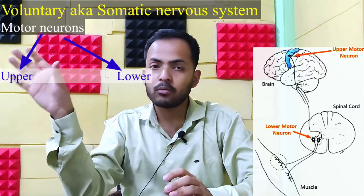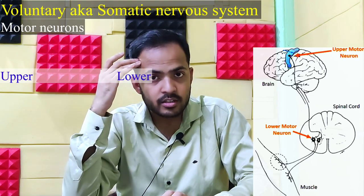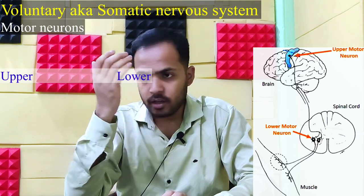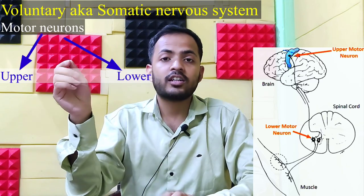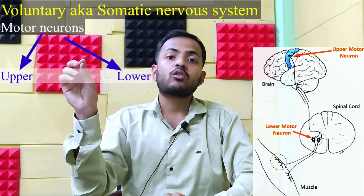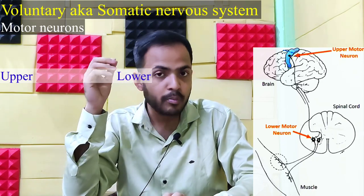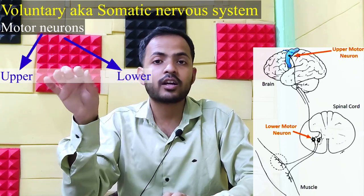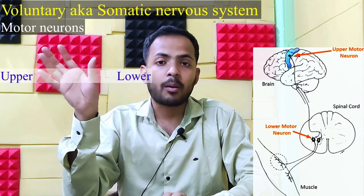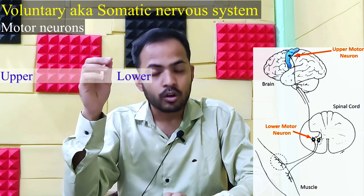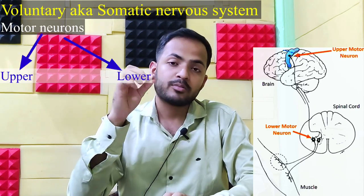The upper motor neuron originates from the pre-central gyrus on both sides of the cerebrum, and their axon — or the tail — forms the corticospinal tract. Corticospinal means from the cortex to the spinal cord. So the axons of these upper motor neurons travel down to the spinal cord.